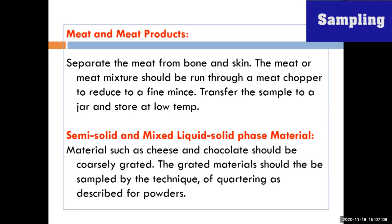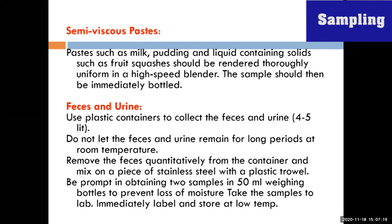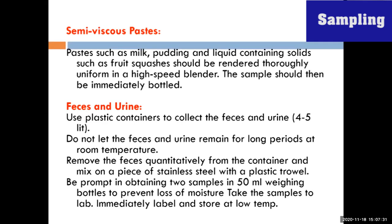For semi-solid mixed or liquid-solid type materials such as cheese and chocolate, coarsely grate the material, thoroughly mix it, and then take the sample by quartering. For semi-viscous materials such as milk samples or pudding containing liquid with solid pieces, thoroughly blend on a high-speed blender or mix with a rod. If no blending is needed, take the sample from different locations within the container.